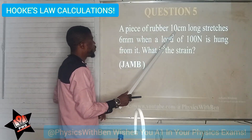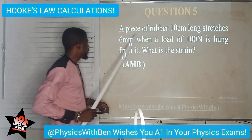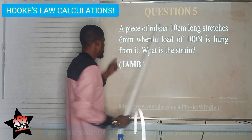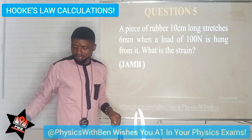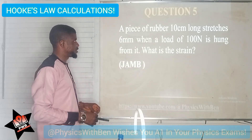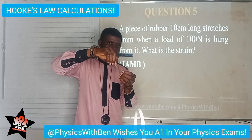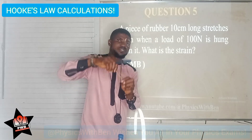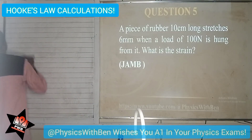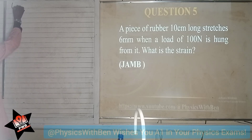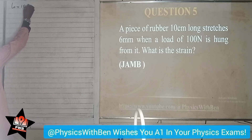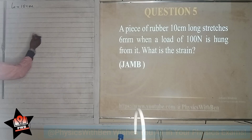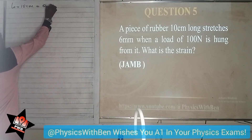A piece of rubber band, 10cm long, stretches 6mm when a load of 100N is applied. What is the strain? So let's collect our data. This is the piece of rubber we are talking about. It is 10cm — that is the original length L₀. So we write that our L₀ is given to be 10cm, and don't forget that we are always converting cm to meters, so this is the same thing as 0.1 meters.